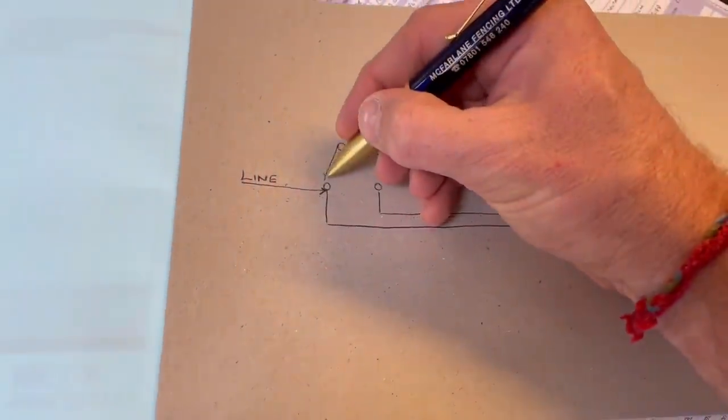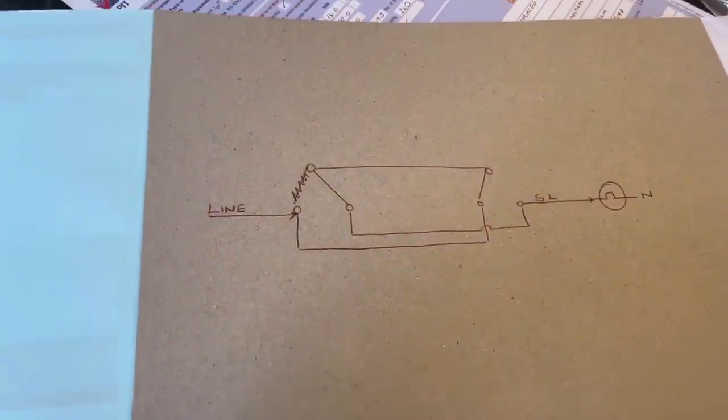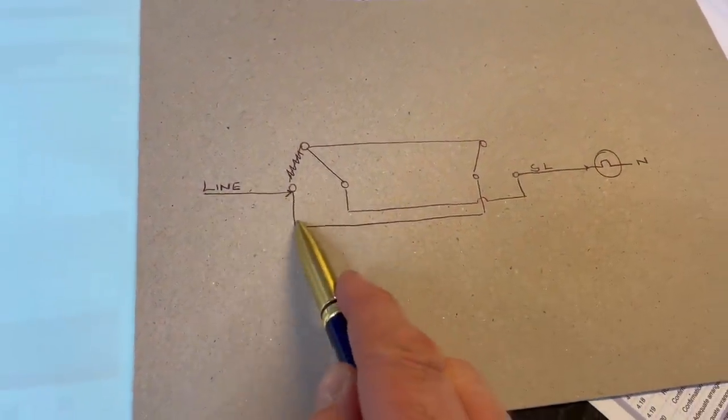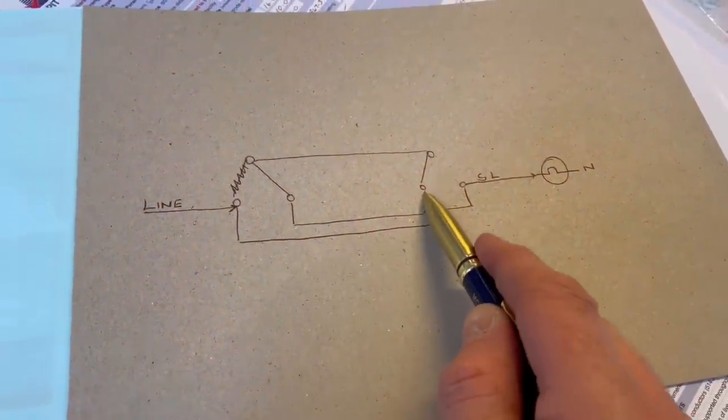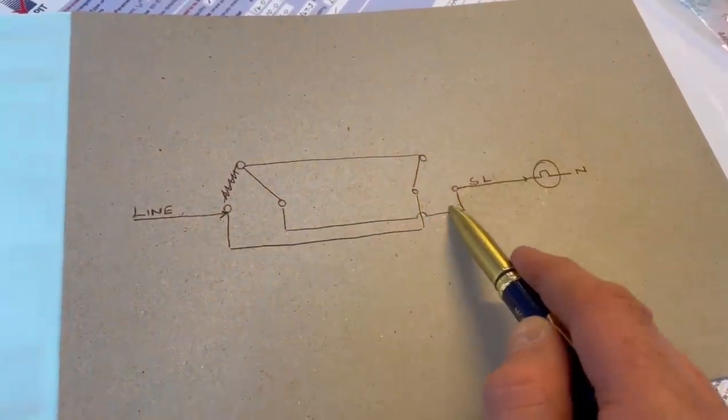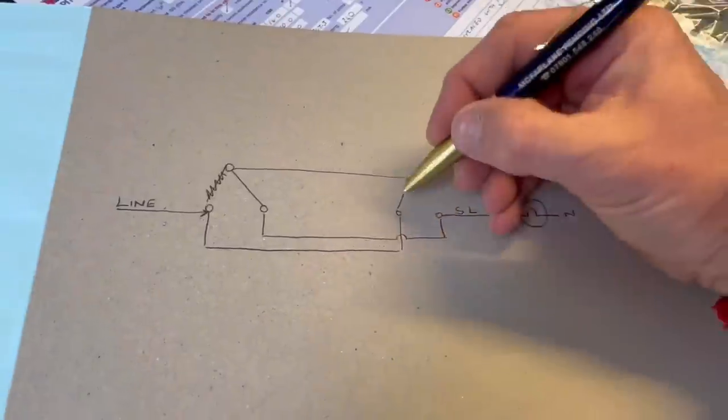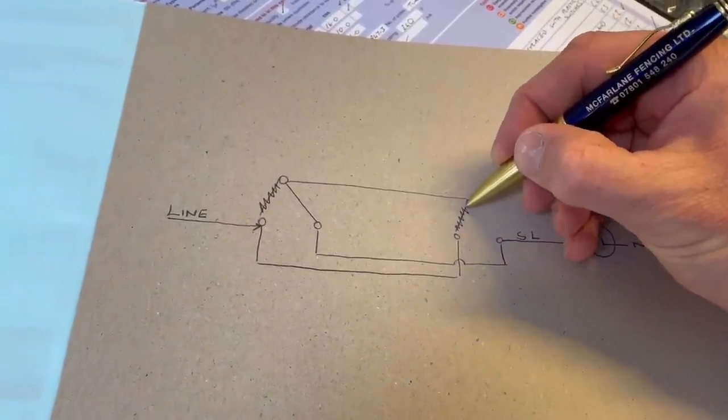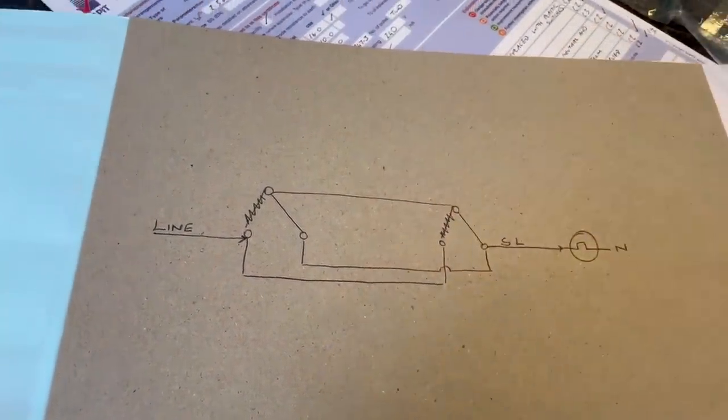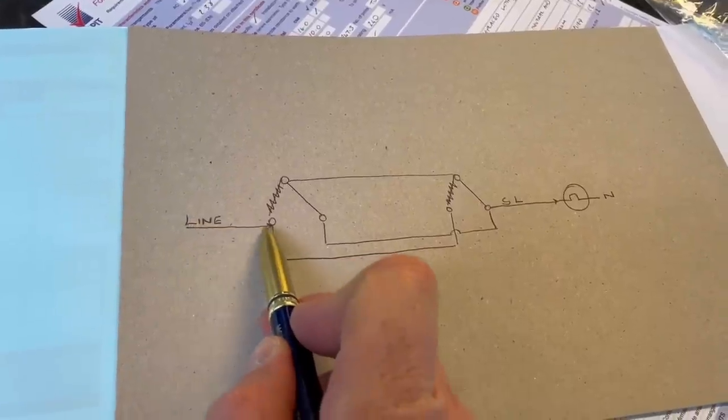So now let's just cross that out and turn this switch to the on position and now let's see what happens. We've got a line conductor coming in, follows up here, across to here, and it looks like the light will illuminate. Now let's operate the other switch into that position.